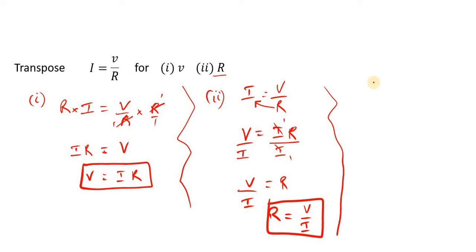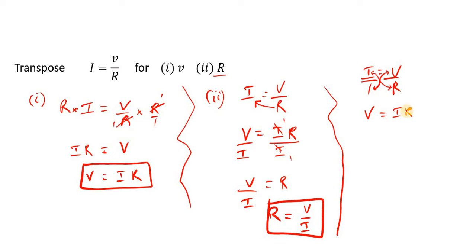There's another way we could do this using cross multiplication. We write I equals V over R and put I over 1, giving two equal fractions. Cross multiplying: I times R gives IR, and V times 1 gives V, so IR equals V. Then dividing both sides by I to isolate R, we get R equals V over I — the same solution.